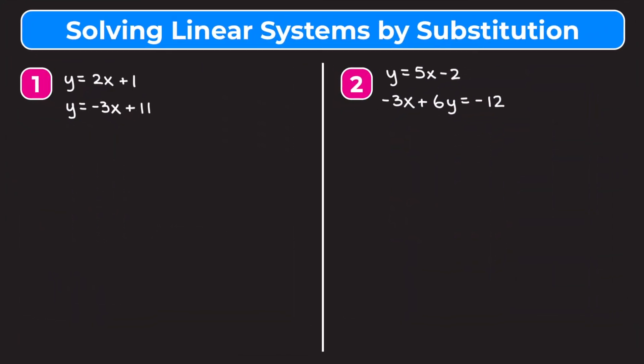In this video we're going to learn how to solve a system of linear equations using a method called substitution. When we're solving a system of equations, we're trying to find the point at which two lines cross — an x and y coordinate point that satisfies both of the equations.